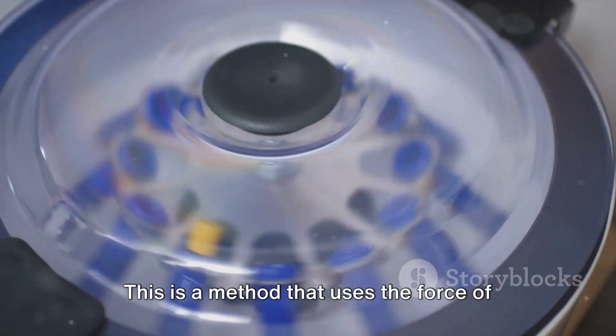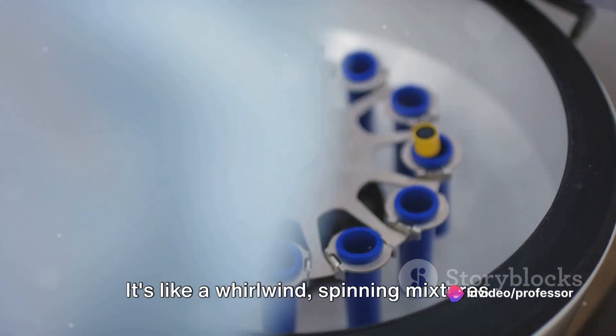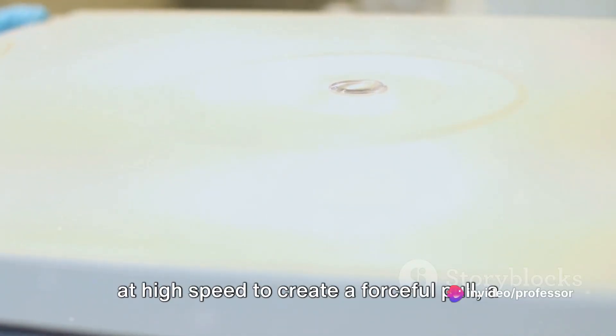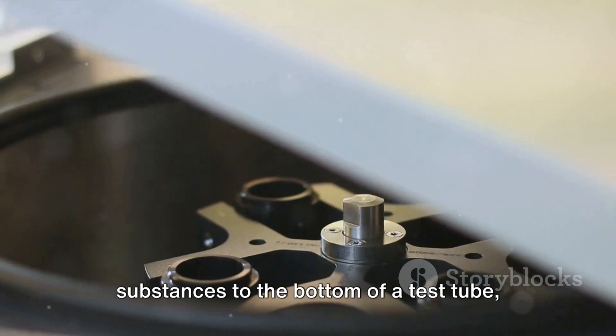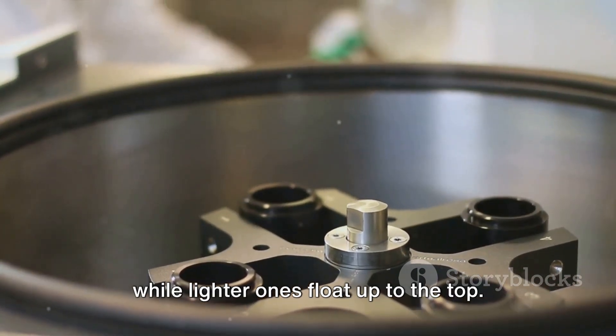This is a method that uses the force of gravity to separate substances of different densities. It's like a whirlwind, spinning mixtures at high speed to create a forceful pull, a centrifugal force that drags denser substances to the bottom of a test tube while lighter ones float up to the top.